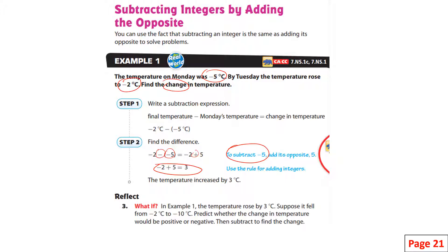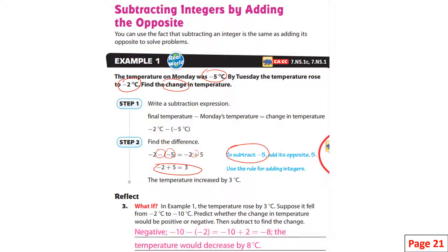What if the temperature fell from negative two to negative ten? Predict whether the change would be positive or negative. It would be negative because negative ten take away negative two is the same thing as negative ten plus two, which is negative eight. The temperature would decrease by eight degrees Celsius.